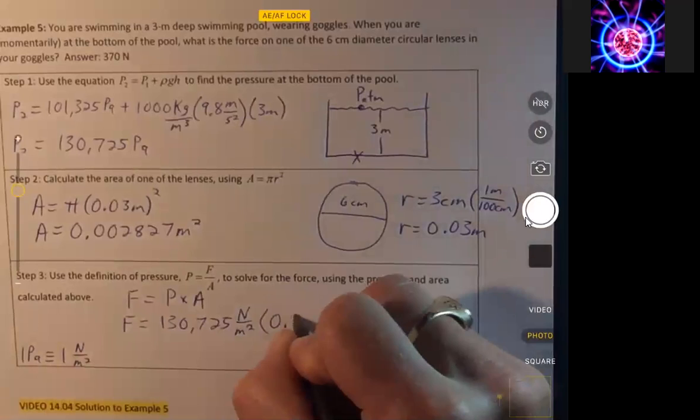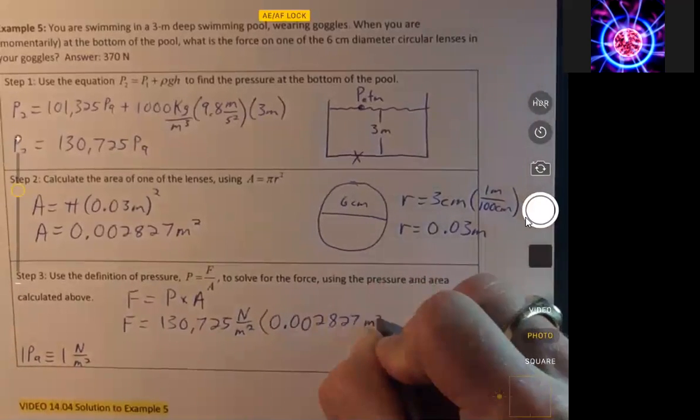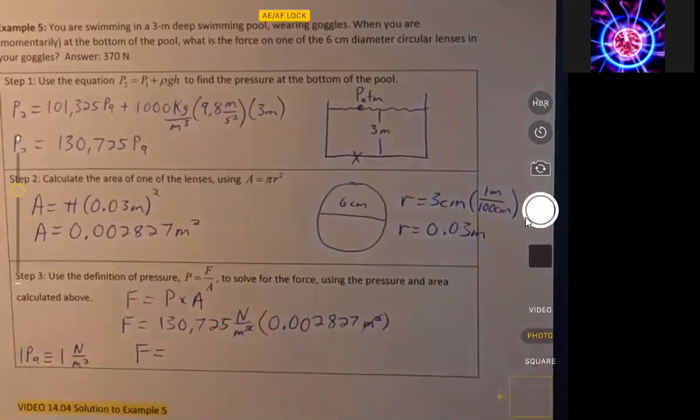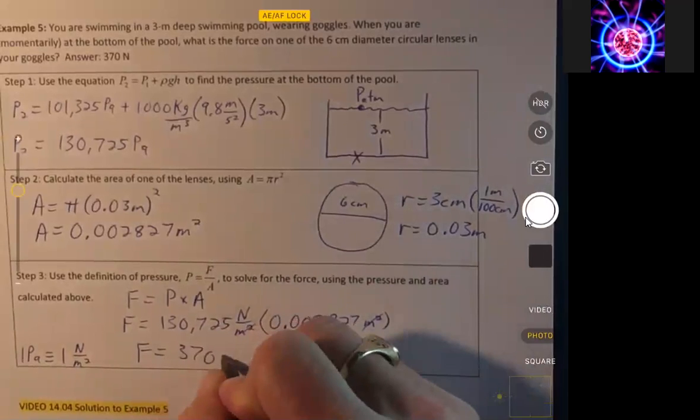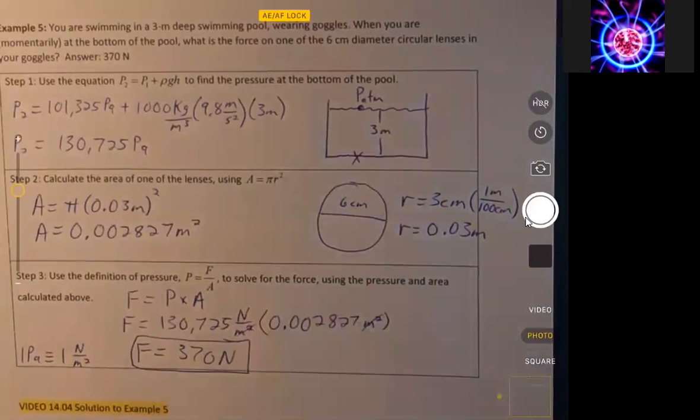And we're going to multiply that by 0.002827 meters squared, meters squared cancels, and we get 370 newtons. And there you have it.